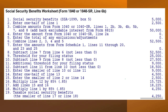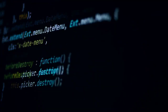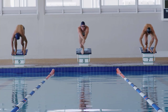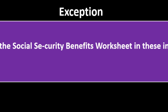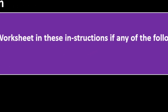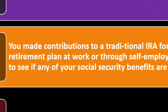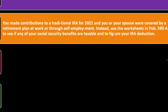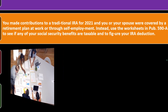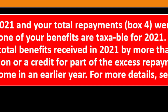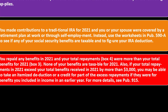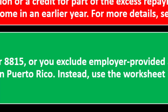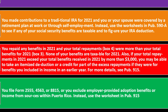Use the social security benefit worksheet in the instructions to see if any of your benefits are taxable. The software will hopefully help you with that worksheet to determine whether it's taxable or not. If you want to see where the thresholds are, you can dive into that in more detail. The general answer is basically up to 85 percent could be taxable. Exceptions: do not use the social security benefit worksheet if you made contributions to a traditional IRA for 2021 and you or your spouse were covered by a retirement plan at work or through self-employment — instead use the worksheet in Publication 590-A. Also if you repaid benefits in 2021 and total repayment in Box 4 exceeded total benefits, or if you file Form 2555, 4563, or 8815, or exclude employer-provided adoption benefits or income from Puerto Rico.